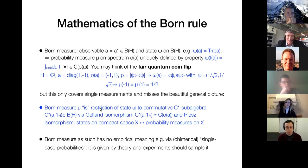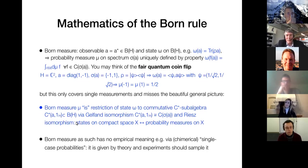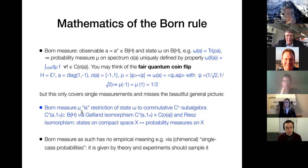The Gelfand isomorphism and the Riesz isomorphism are the two most canonical things in functional analysis, insofar as Hilbert space theory is concerned. There is no way around the Born measure — it's incredibly canonically given by the mathematical setting.